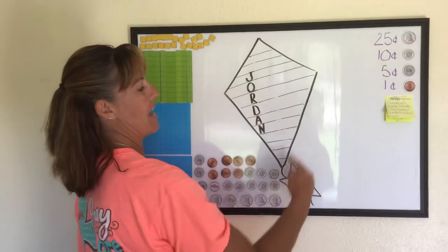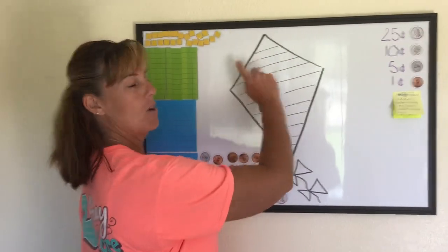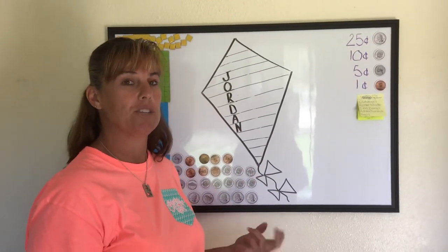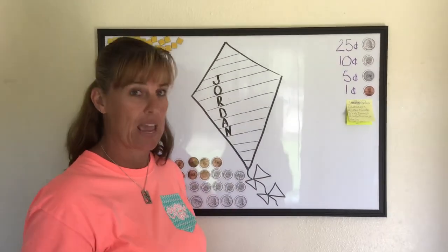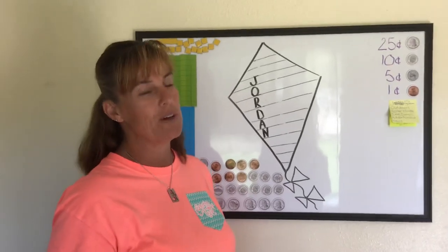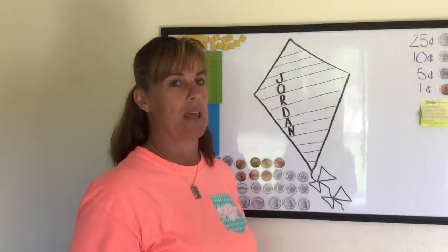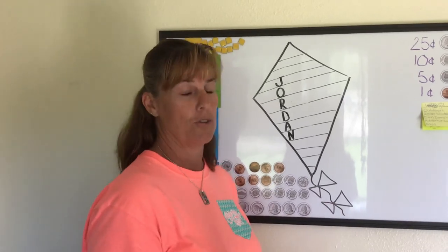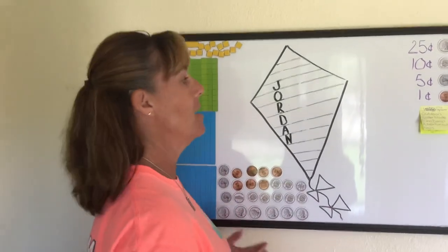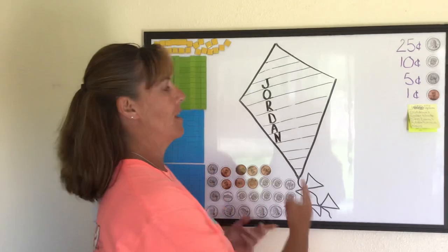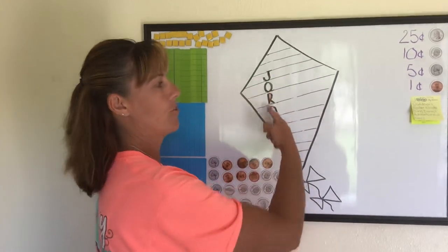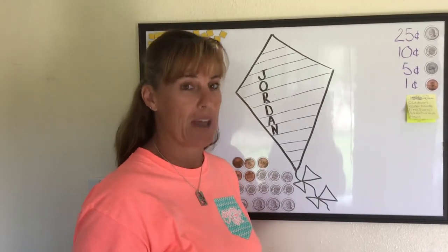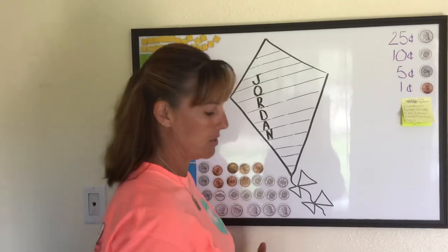You guys should have a kite paper with the lines on it. The acrostic that I want you to do is your name. Duno, you have a pretty short name, so you can do Duno Cho — do your first and last name. Today I'm going to show you an acrostic for Jordan, and we're going to use all the words that describe Jordan as a person.